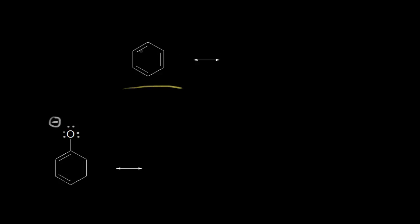We take these electrons right here and move them over to here. That would mean too many bonds to this carbon, so we'd have to take these electrons and push them to here, which would mean too many bonds to this carbon, and so finally we take these pi electrons and move them over to here. So we draw our resonance brackets and draw our other resonance structure for benzene.